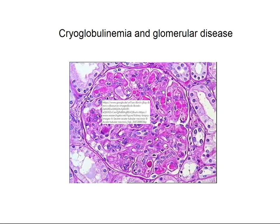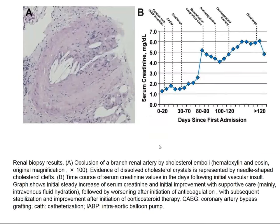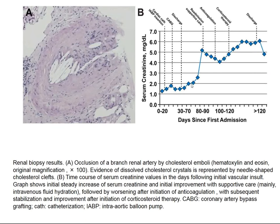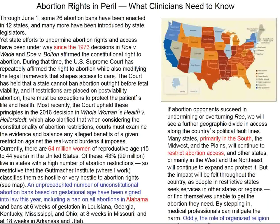Cryoglobulinemia was also given in the differential diagnosis. In cryoglobulinemia, we would expect a lobular glomerulonephritis where the tuft material fills the entire Bowman's capsule, with cryoglobulins as shown in this section. Renal infarction is caused by closure of an entire renal vessel, which can also happen with cholesterol embolization. Here's another example where this blood vessel was closed, leaving open clefts from the fixative dissolving the cholesterol. This patient also developed renal failure over a number of days from cholesterol emboli.